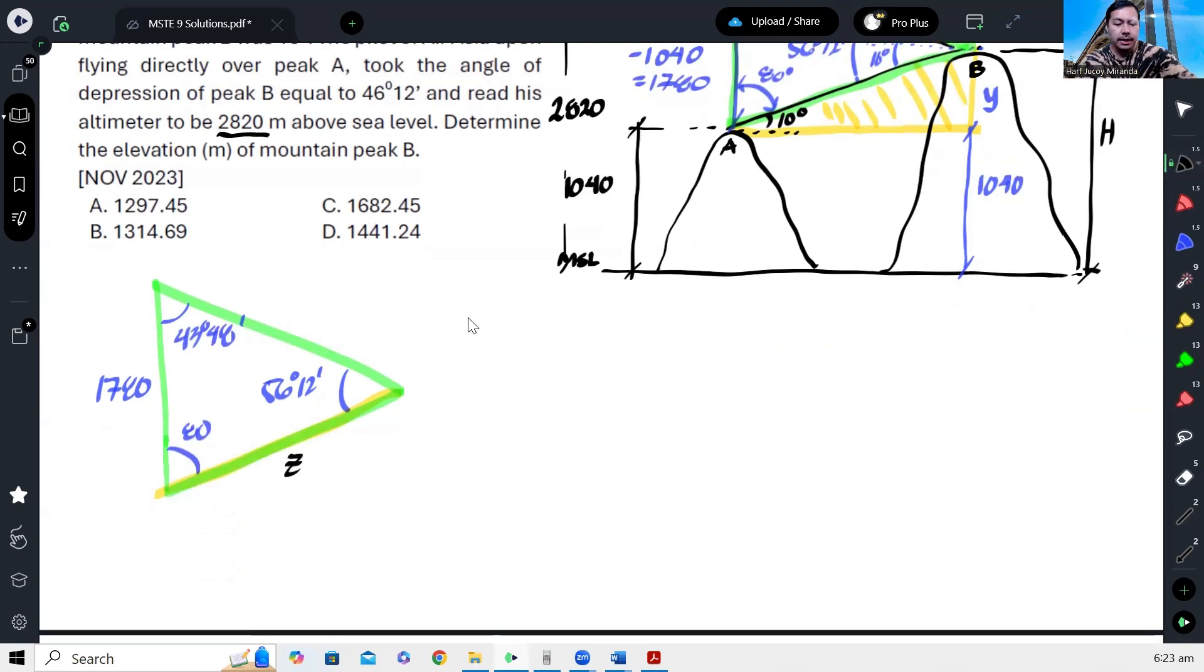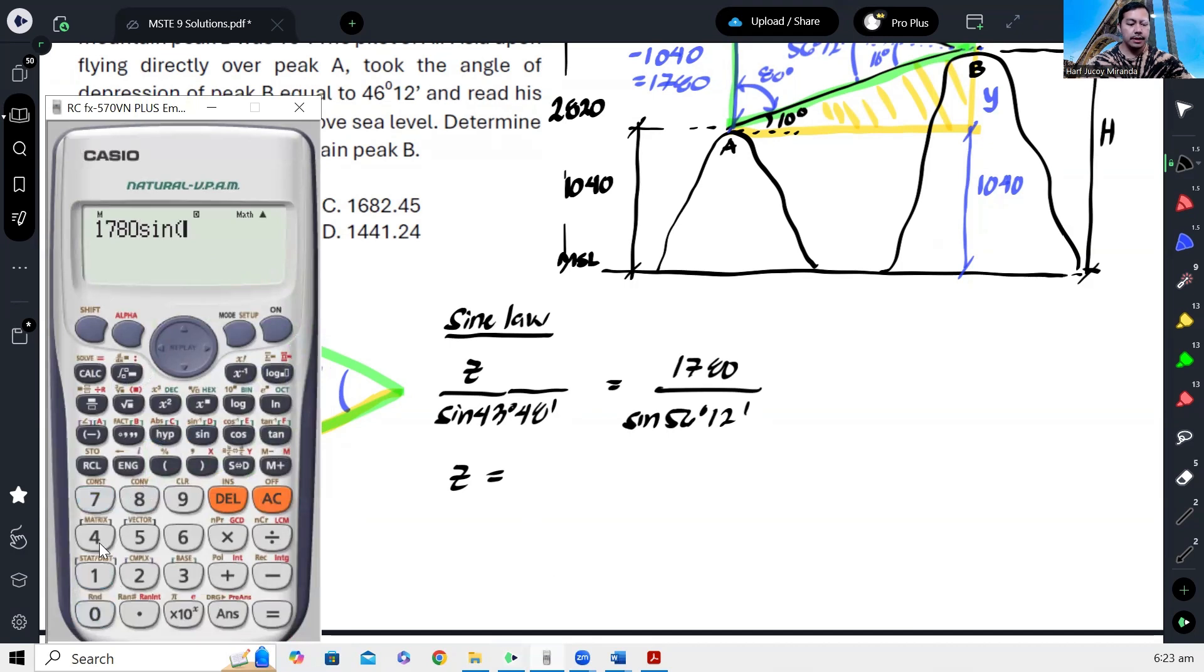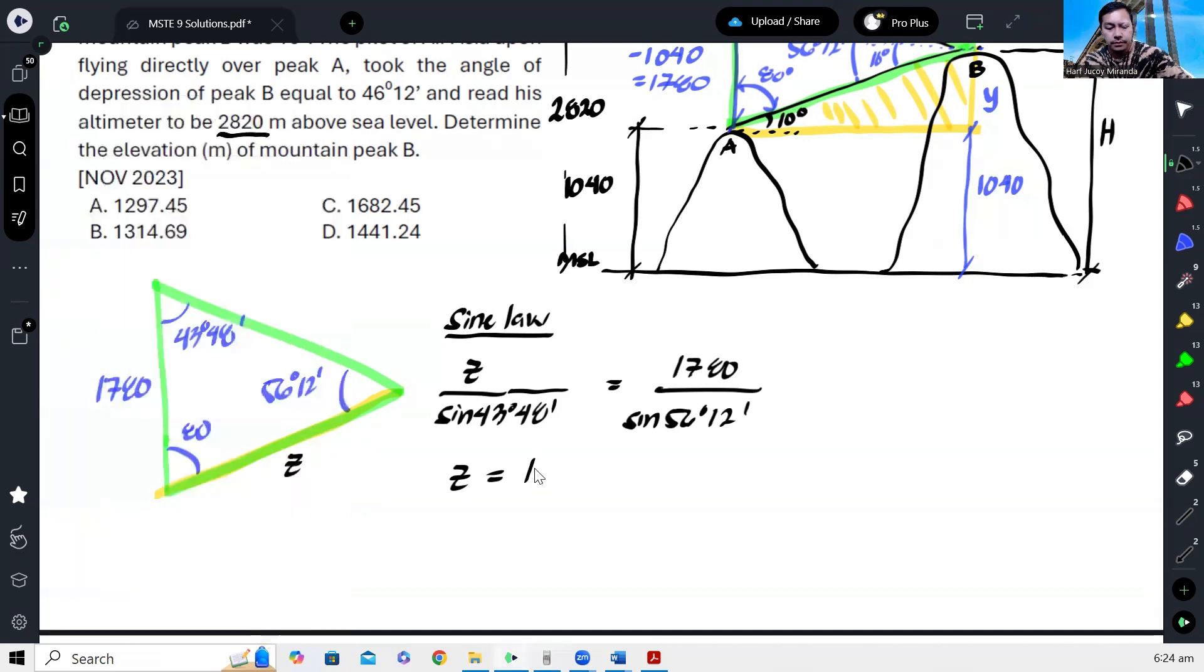To solve for z, we can just apply sine law. That would be z over sine of 43 degrees 48 minutes equals 1,780 over sine of 56 degrees 12 minutes. So we can solve for z by cross-multiplying. That gives us 1,482.6 meters.